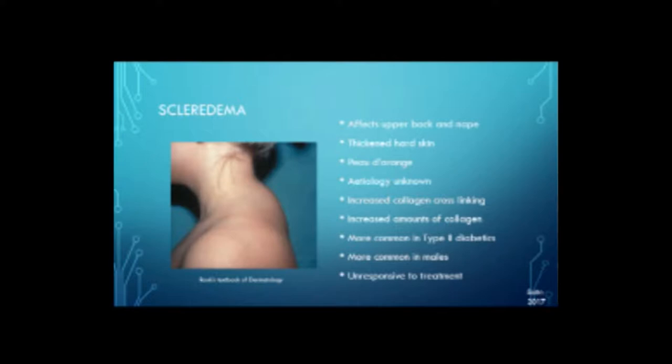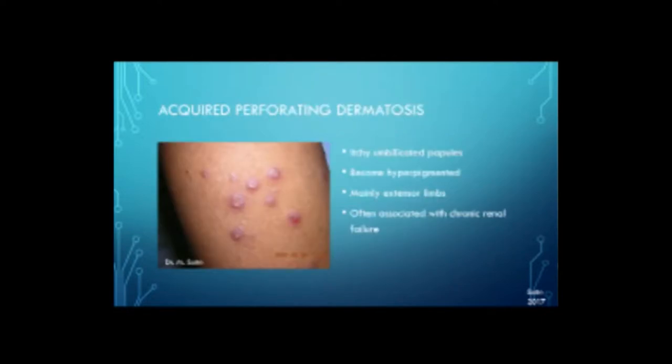Here we have sclerodema — not to be confused with scleroderma. The full name is sclerodema of Buschke. It affects the upper back and the nape. You get thickened, hard skin with a peau d'orange appearance. The etiology is unknown, but there's increased collagen cross-linking and increased amounts of collagen. It's more common in type 2 diabetics and in males, and it's unresponsive to treatment. We don't tell our patients it's unresponsive — it's very distressing — so we do things to try to make it softer for them. We do tell them that it's difficult to treat.